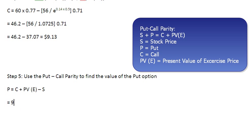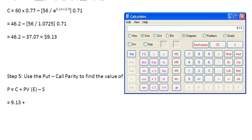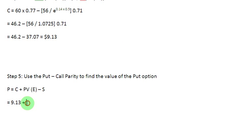So let us write that $9.13 plus the present value of the exercise price. We have already found out the present value of the exercise price here. So since we don't remember what number it gave us, let us do that one more time. 56 over 1.0725 and that gives us 52.21. That is the present value of the exercise price.